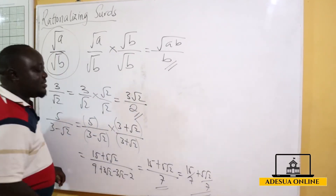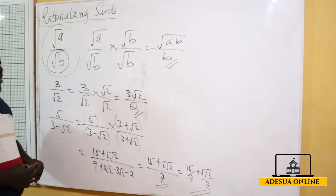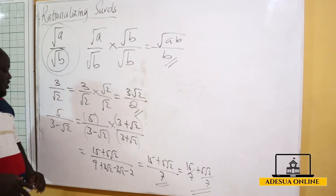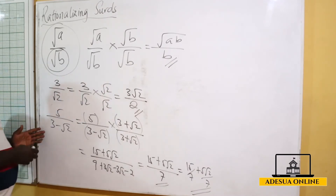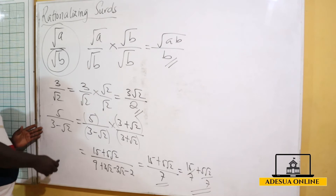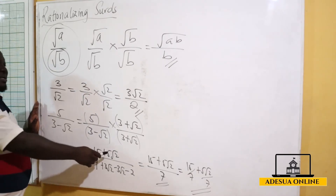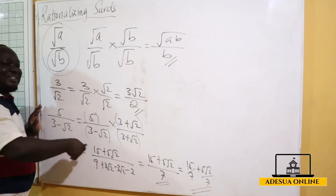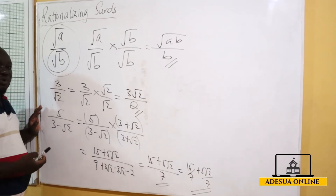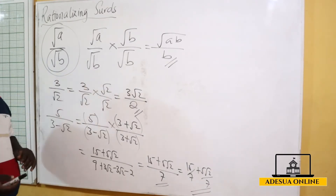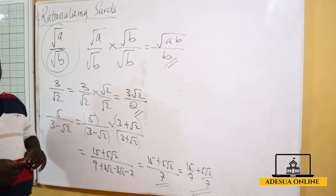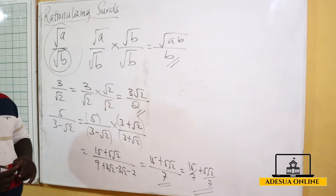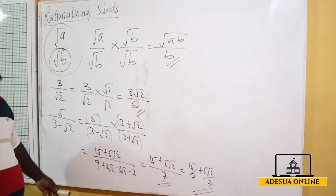This is how we rationalize surds. Note that if the denominator were 3 plus root 2, we would multiply by its conjugate 3 minus root 2. The conjugate is simply the opposite sign. Now let's attempt some questions on rationalization of surds.